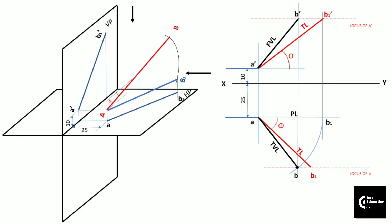We can measure the angle made by the front view line with the XY line, and the angle made by the top view line with the XY line. These angles are alpha and beta respectively.